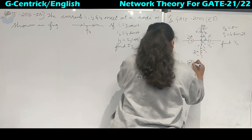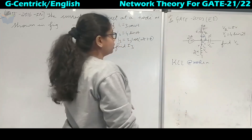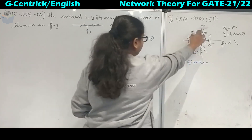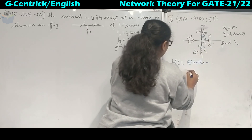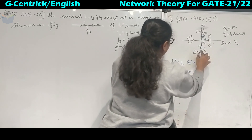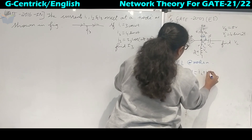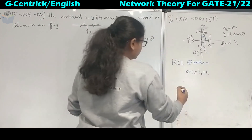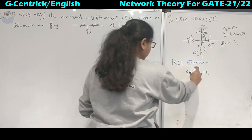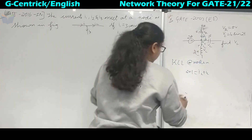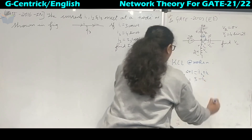Applying KCL at node A: both 2 and 1 ampere currents are incoming, so 2 plus 1 is equal to IL plus IC — they are leaving the node. We will equate in terms of IL because we need the voltage of the inductor. IL is equal to 3 minus IC.